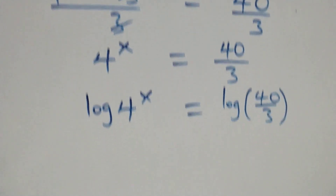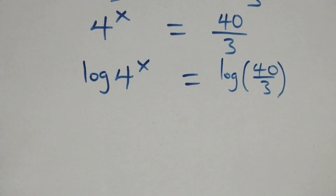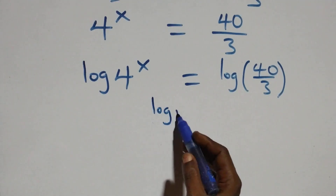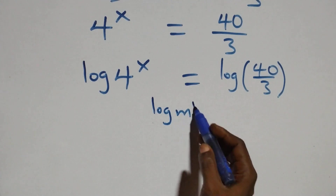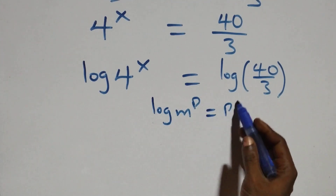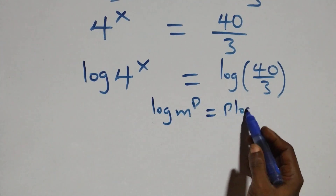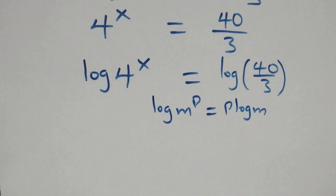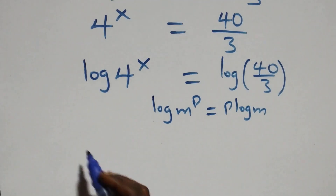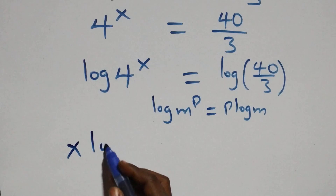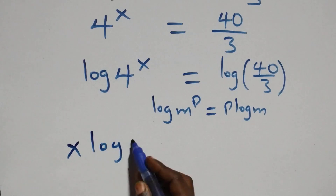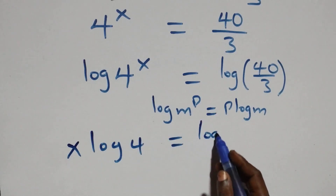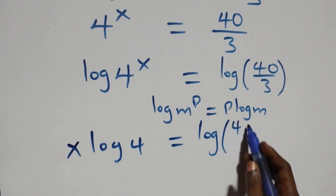The next step, we apply the power rule of logarithms. When we have log m raised to power p, this is the same thing as p times log m. So what we have here becomes x log 4 equals log of 40 over 3.